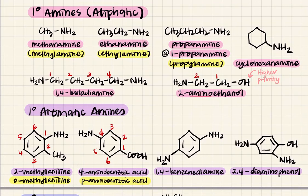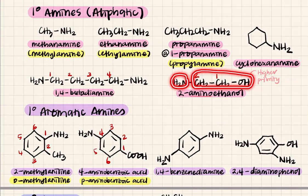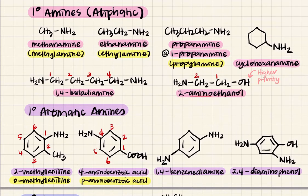If you have different functional groups — a functional group that is higher in priority than the amino group, like alcohol or carboxylic acid — you give priority to that functional group as the parent. So ethanol becomes the parent, and the amino group becomes a substituent, giving 2-aminoethanol. When the amino group is a substituent, it is called 'amino'.